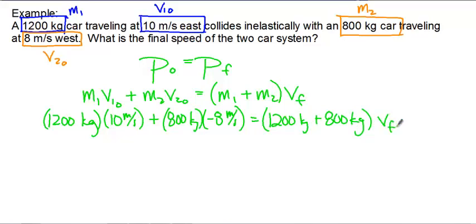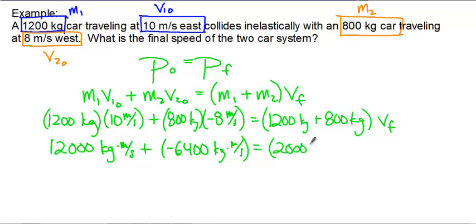So let's evaluate some things here. 1,200 times 10 is 12,000. So we get our initial momentum of car 1 is 12,000 kilograms meters per second. 800 times negative 8 is negative 6,400 kilograms meters per second. That equals 2,000 kilograms times Vf. So plug in our calculator, 12,000 minus 6,400 is 5,600. We divide by 2,000. And then we get the final speed of our two cars together is a positive 2.8 meters per second. So it makes sense. The speed should be less than the speeds of the two beforehand because now we're combining two masses together.